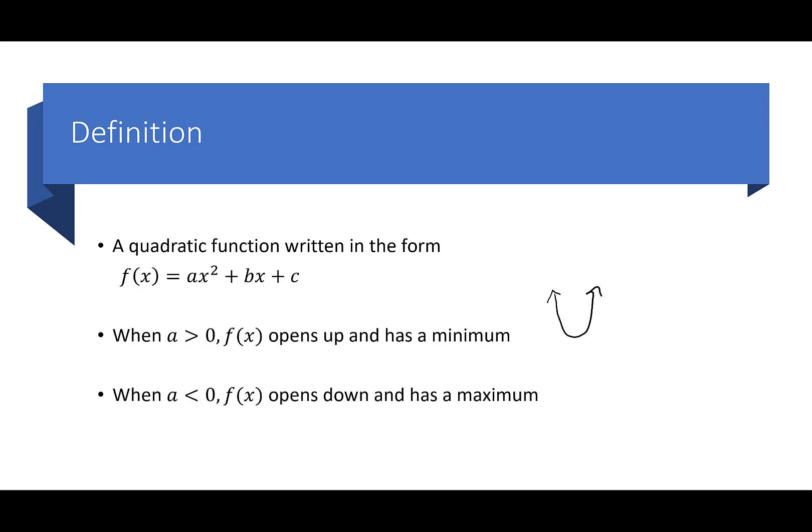Quadratics look like a U. The vertex is this bottom place. So when a is positive, it opens up and you can see there is a minimum. When a is less than zero, so if I have a negative number, f(x) is going to open down. I have this upside down U.